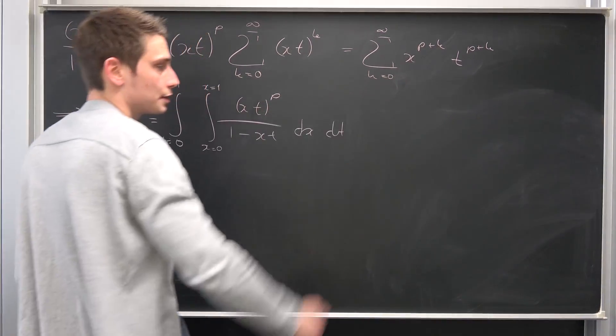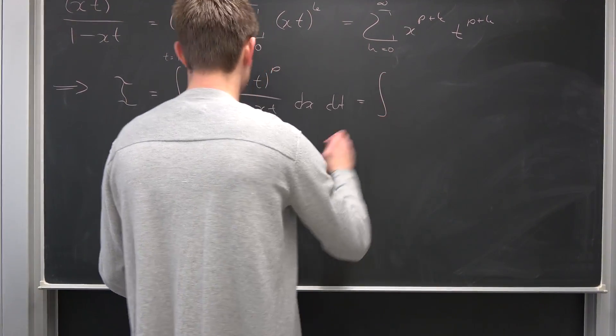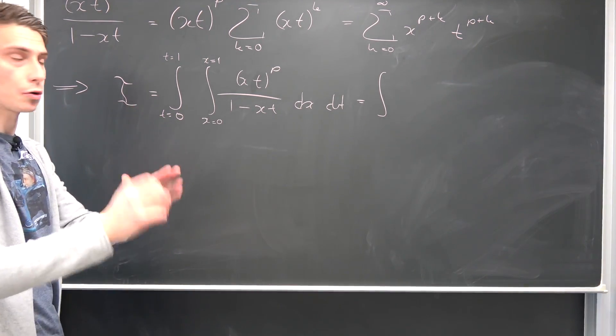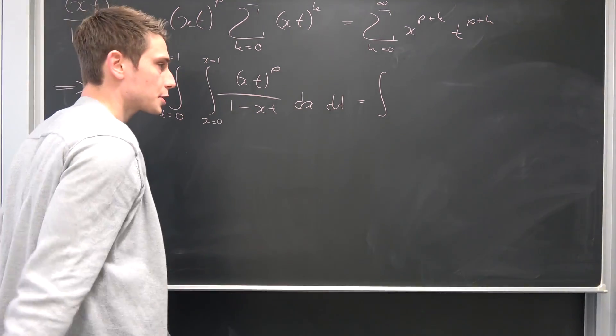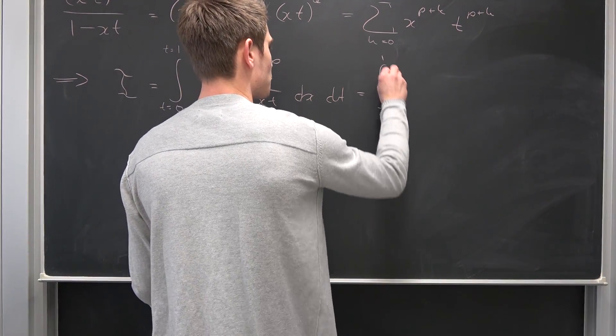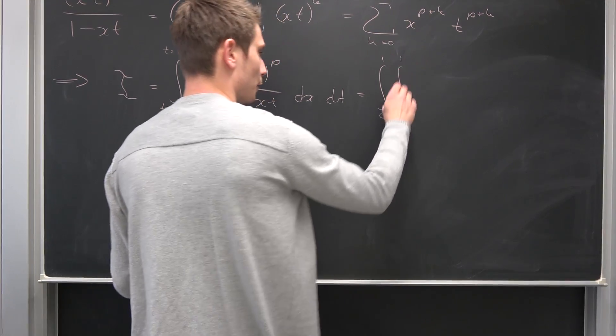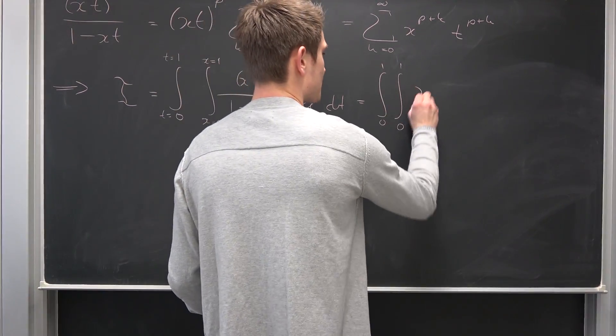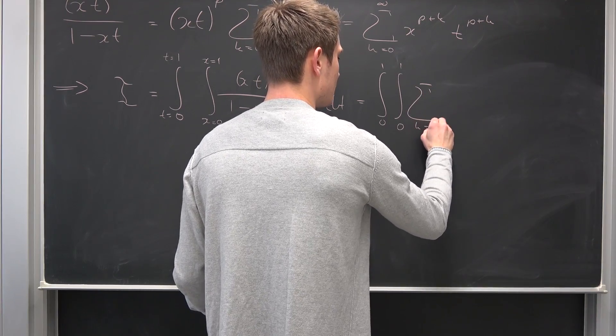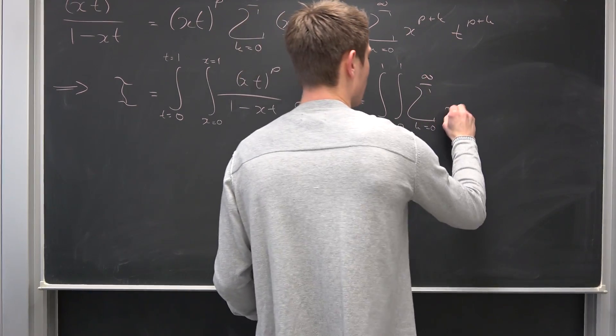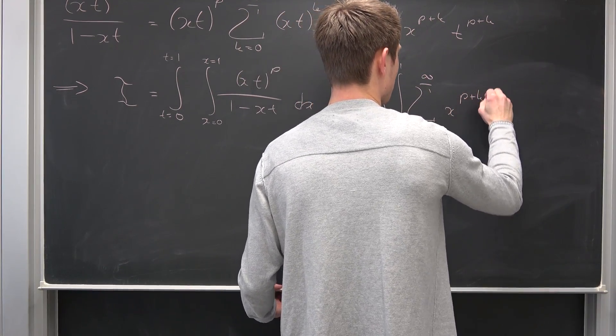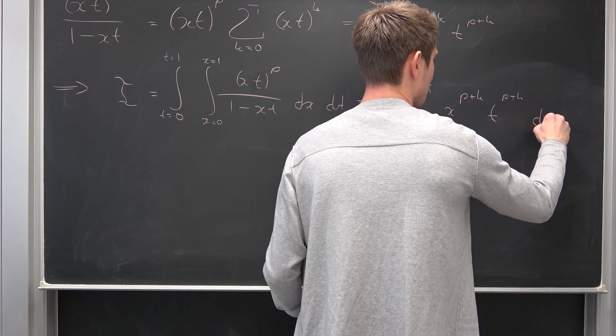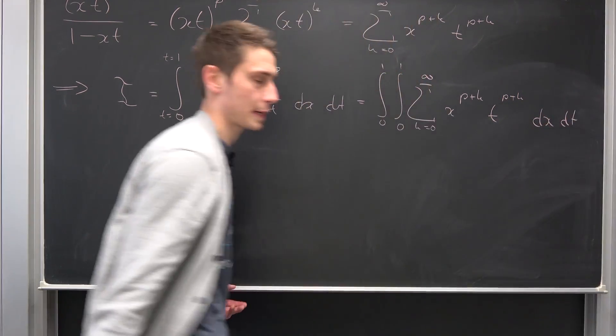Now we can just plug this new definition in. I'm going to leave this t equals something and x equals something out of the way. We know the order of integration by those differentials right here. So integral from 0 to 1 of the integral from 0 to 1, and then we have the sum running from k equals 0 to infinity of x to the p plus kth power, t to the p plus kth power, integrated with respect to x, integrated with respect to t.